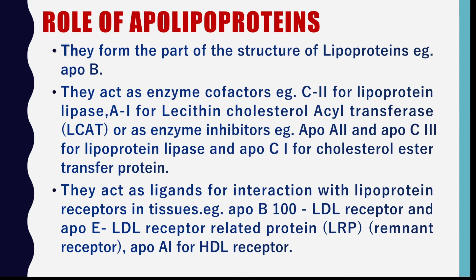Functions of apolipoproteins apart from structural roles: These apoproteins act as enzyme cofactors — for example, lipoprotein lipase is activated by apoprotein C2, and LCAT (lecithin cholesterol acyltransferase) is activated by apoprotein A1. Some apoproteins act as inhibitors; apoprotein A2 inhibits lipoprotein lipase. Apoproteins also act as ligands to bind with specific receptors on target tissues — for example, apoprotein E binds with LDL receptor-related protein (LRP), apoprotein A1 binds with HDL receptor, and apoprotein B100 binds with LDL receptor.